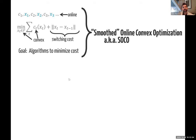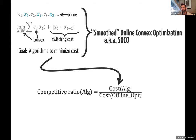Summarizing: you see a cost, make a choice, see a cost, make a choice, and so on. You have hitting costs and a switching cost — a norm or something more general — that penalizes movement. The competitive ratio is the most common metric, comparing you against what the offline optimal could have done, knowing the full future and picking the full trajectory of actions. Being within a constant multiplicative factor of the offline optimal is the goal.